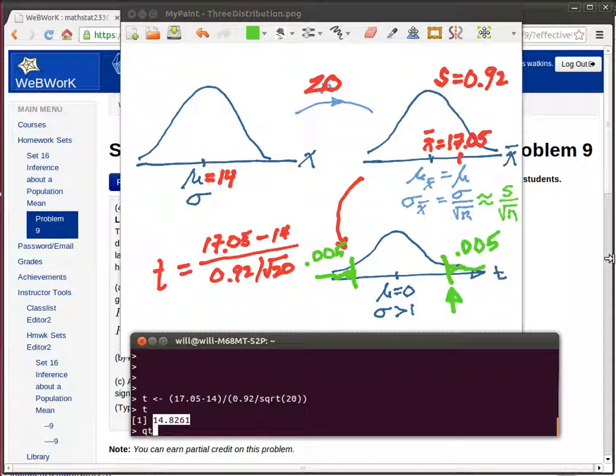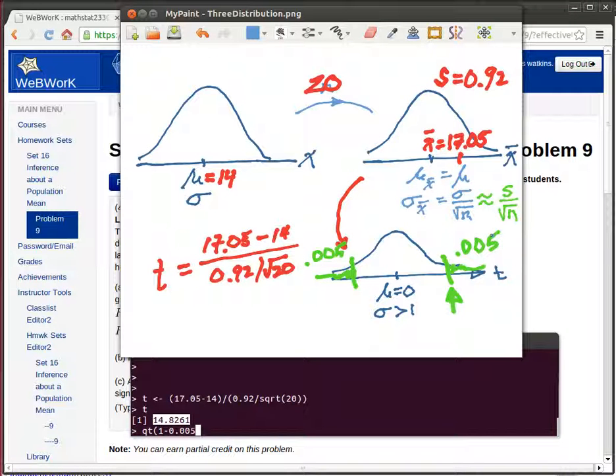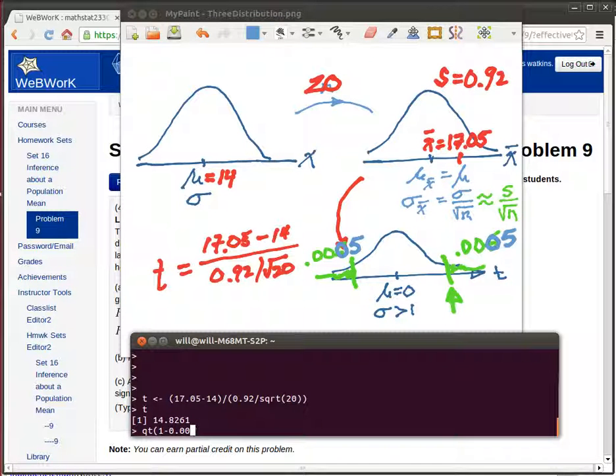Because it's going to be a Qt of 1 minus 0.005. Oh did you see that error? Because we were looking at a 1%, let me correct that error, this should have been a 0.005 because it needed to be half of 1%. Be careful there. 0.005 with the degree of freedom, the sample size was 20, so the degree of freedom is 19.